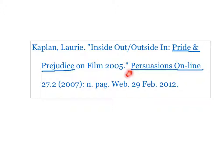Then comes the title of the periodical, Persuasions Online, followed by the volume number, a period, and the issue number. The year goes in parentheses. And because this is a web page, it doesn't have any pagination. So after my colon, I put n.pag, which is the abbreviation for no page.